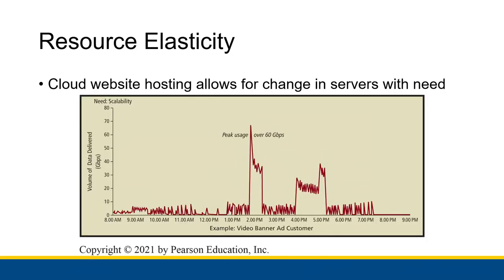We talked a lot about resource elasticity in the last video — allocating additional resources when a website needs to handle additional traffic. What we have here is an example based on real life data for a company running ads during a major televised event. The textbook talks about a car manufacturer running televised ads during the Academy Awards that direct people to its website, with the ads running at around two and four. We see peaks in usage — peaks in the amount of people trying to visit that website at around the times those ads are running.